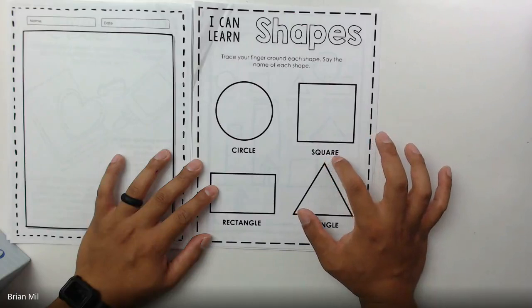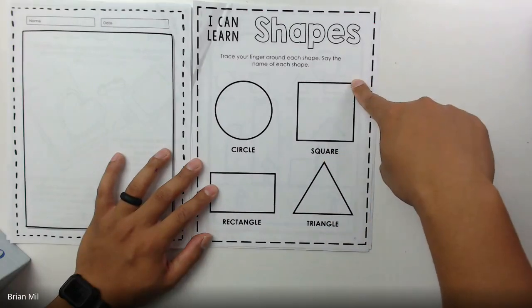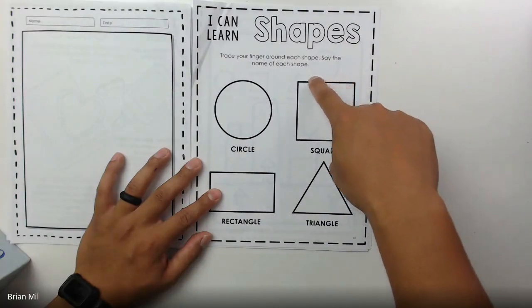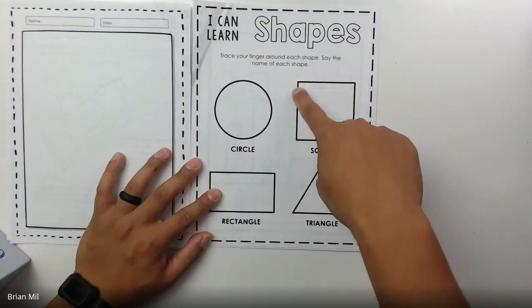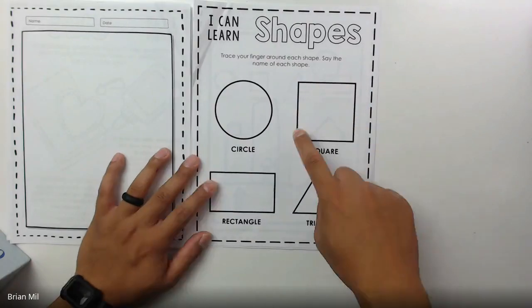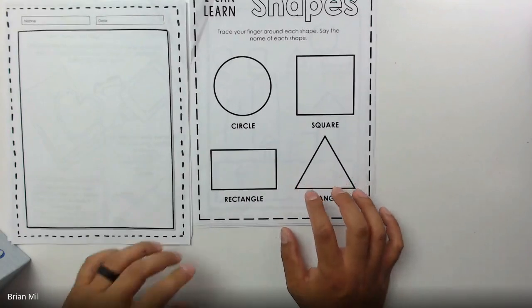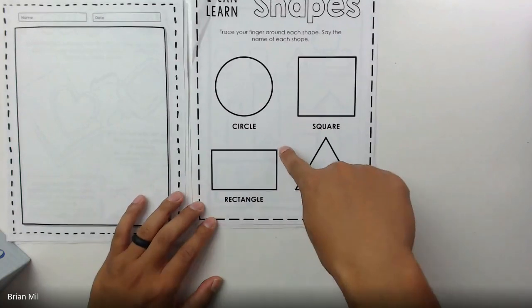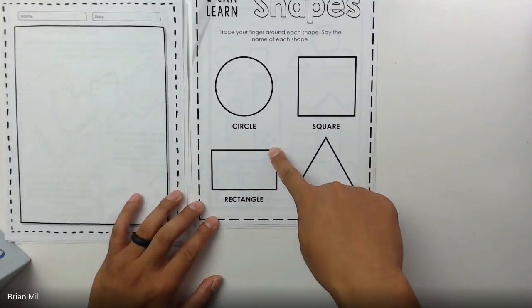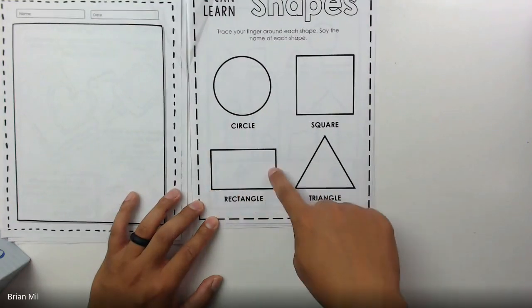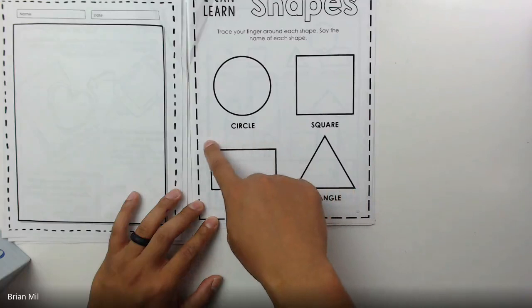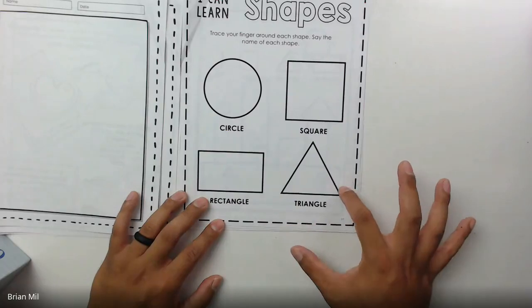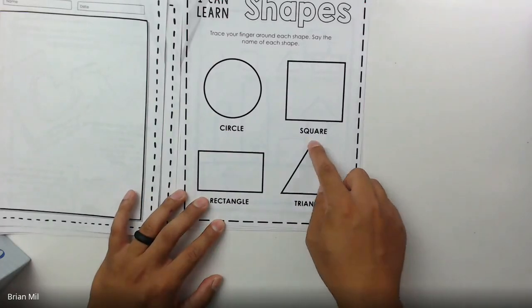We're going to do the bottom one next. This is a long word. This is called a rectangle. So I'm going to put my finger on the rectangle and I'm going to say it together with you guys. Ready? Here we go. Rectangle. Rectangle. Good job! I like how you guys are talking with me. The last one: triangle. So we're going to say it together. Put your finger on the triangle. Here we go. Triangle. Triangle. Good work!